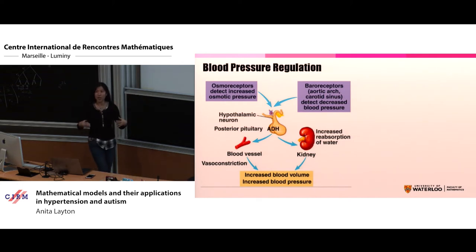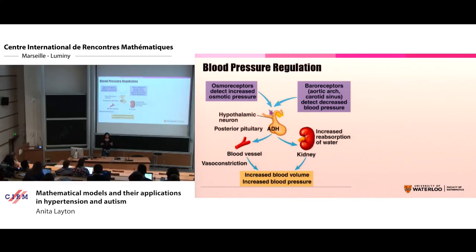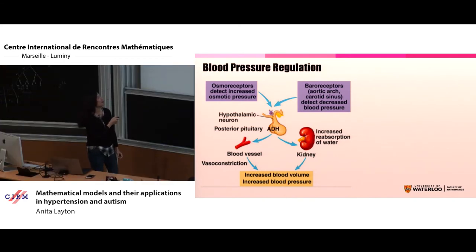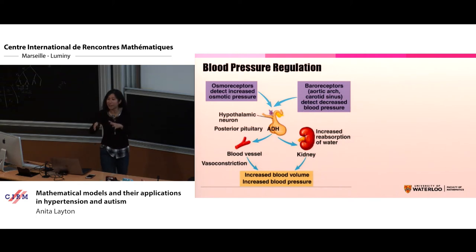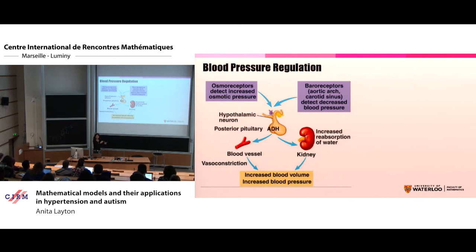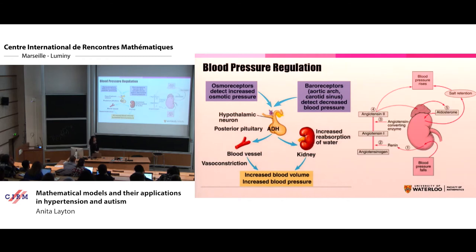You want to maintain your blood pressure at a certain level. When your body detects that you are kind of off the mark — let's say your blood pressure is a little lower than it should be — there are some sensors that will try to see how concentrated your blood is. If your blood is too concentrated, it's an indication that you don't have enough fluid, so your blood pressure is probably low. There are also baroreceptors that actually measure the pressure in your blood. If your blood pressure is too low, your body tries to do something.